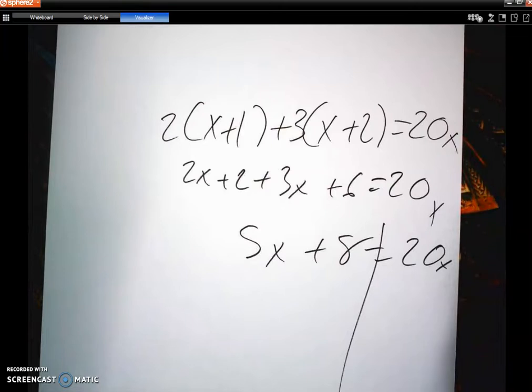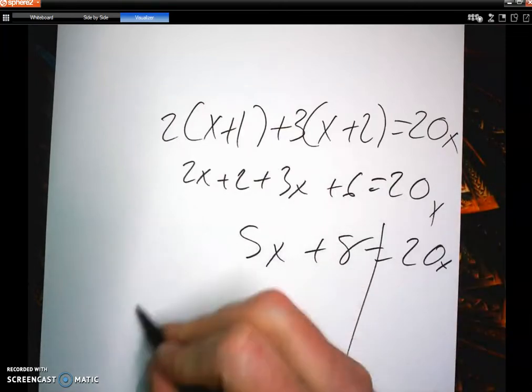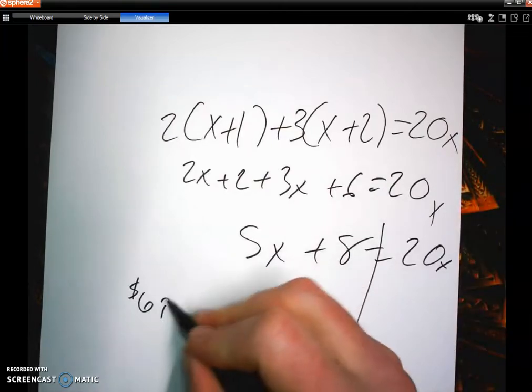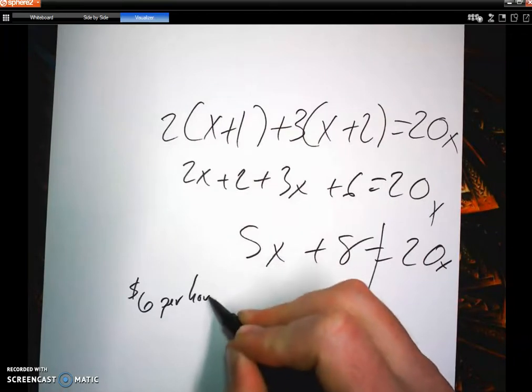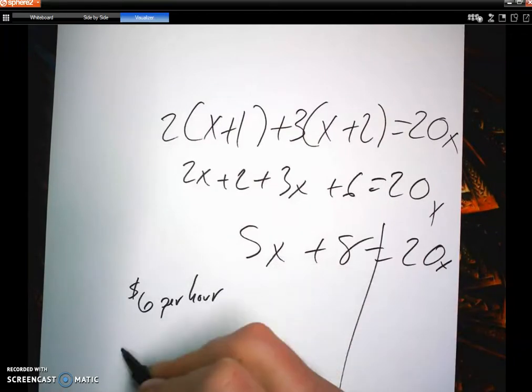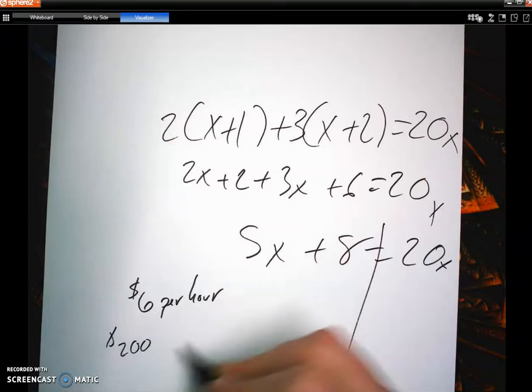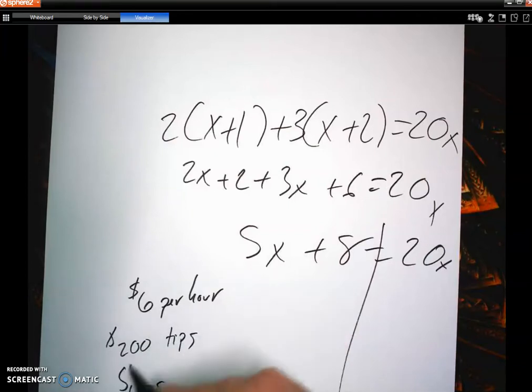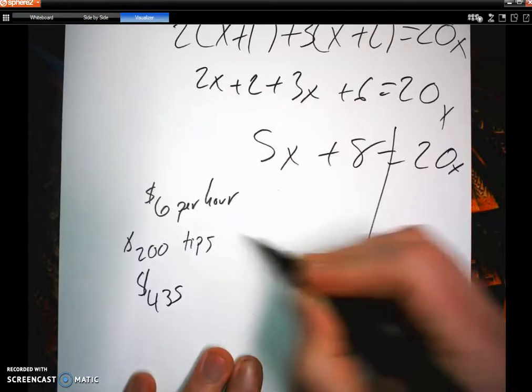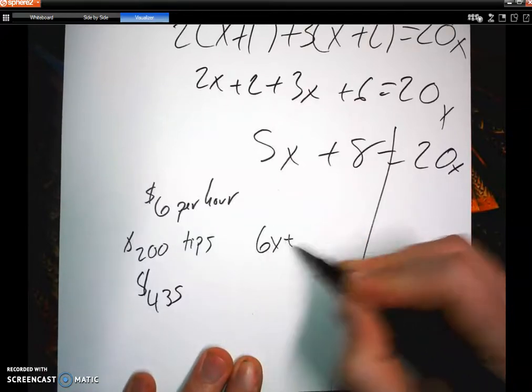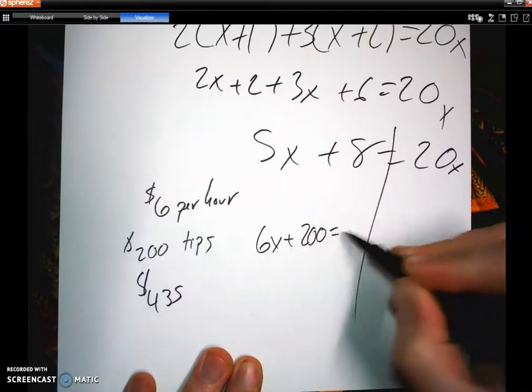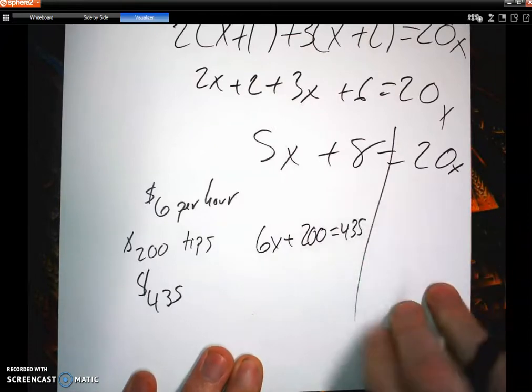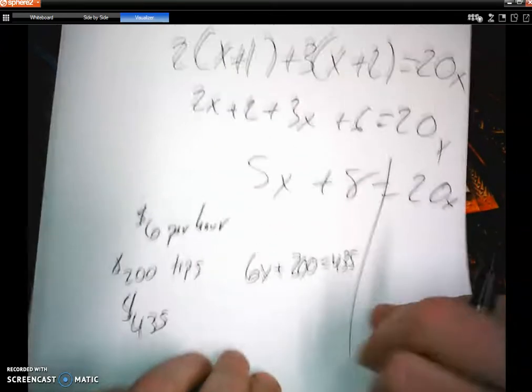How are you at writing them? How are you at taking information like $6 per hour and $200 in tips, and in one week you made $435. That would be an equation of $6 per hour plus $200 for a total of $435 in a week's work. So you're going to see definitely stuff like that.